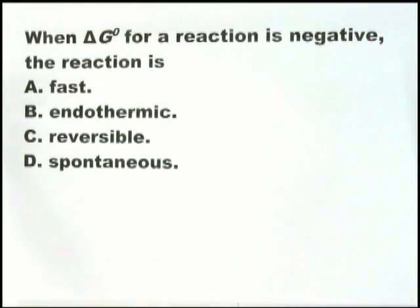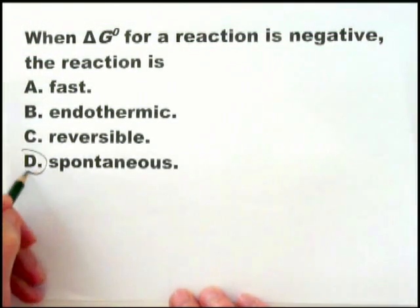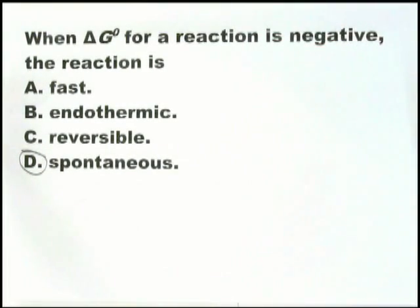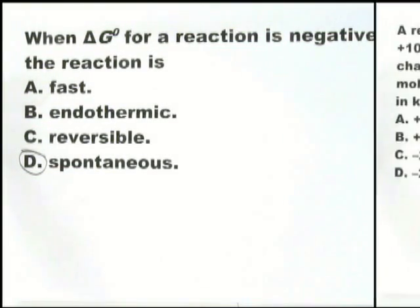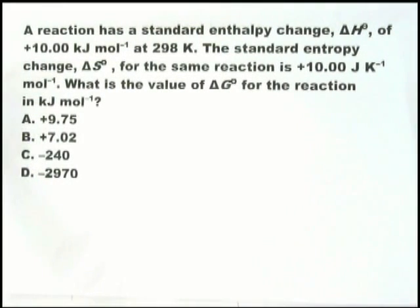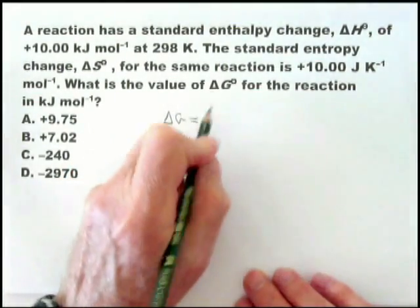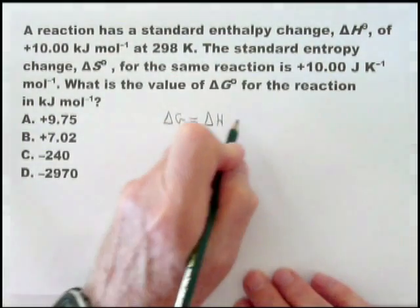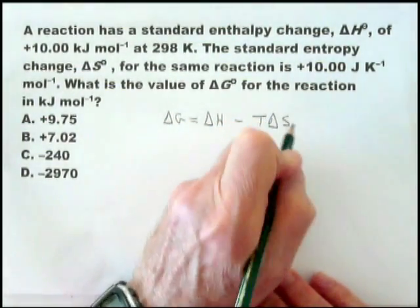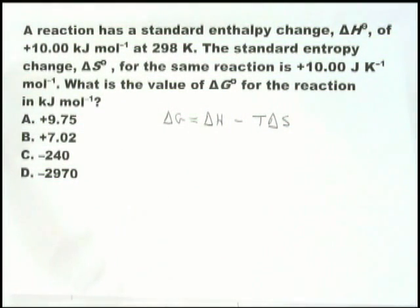The most important thing about delta G is you must know that if delta G is negative, it is spontaneous. Delta G must be negative for the reaction to be spontaneous. Spontaneous simply means that the reaction goes to completion under the conditions described. In this question, they're clearly asking you to know that delta G equals delta H minus T delta S. This is one of those formulas you just have to remember.